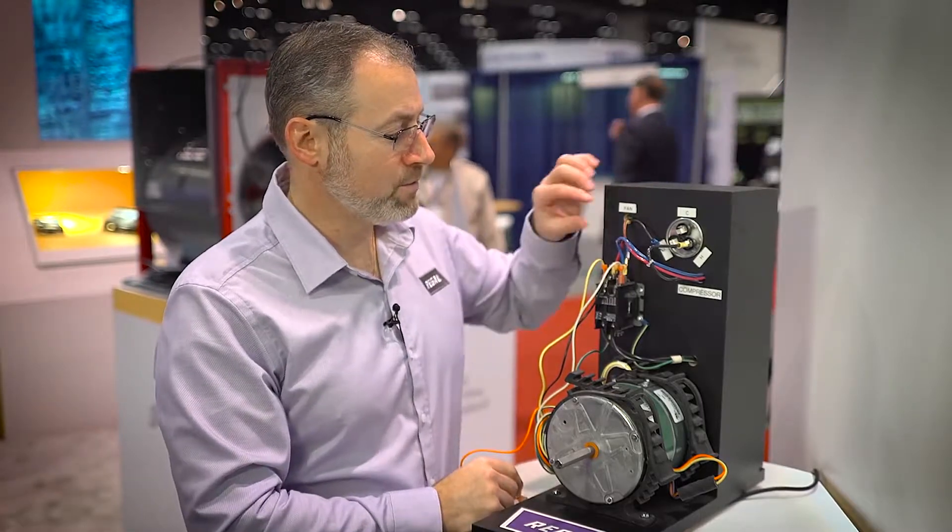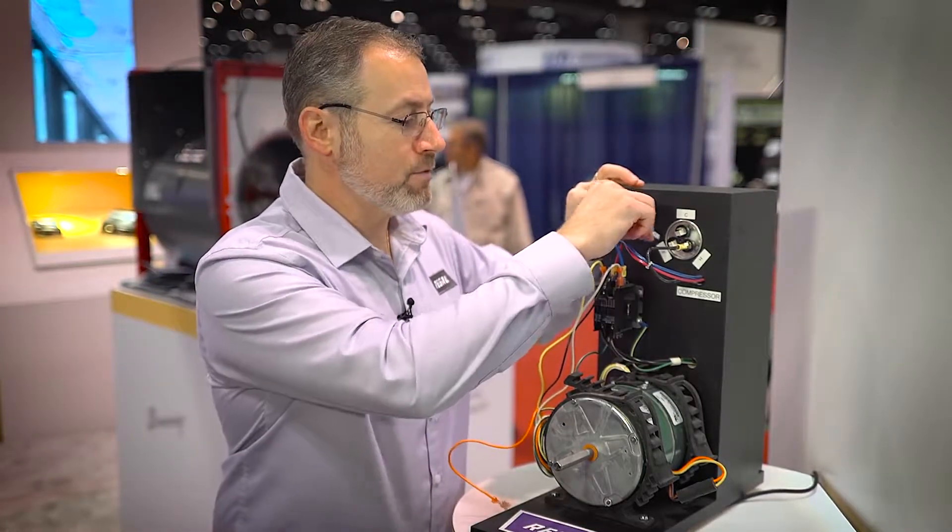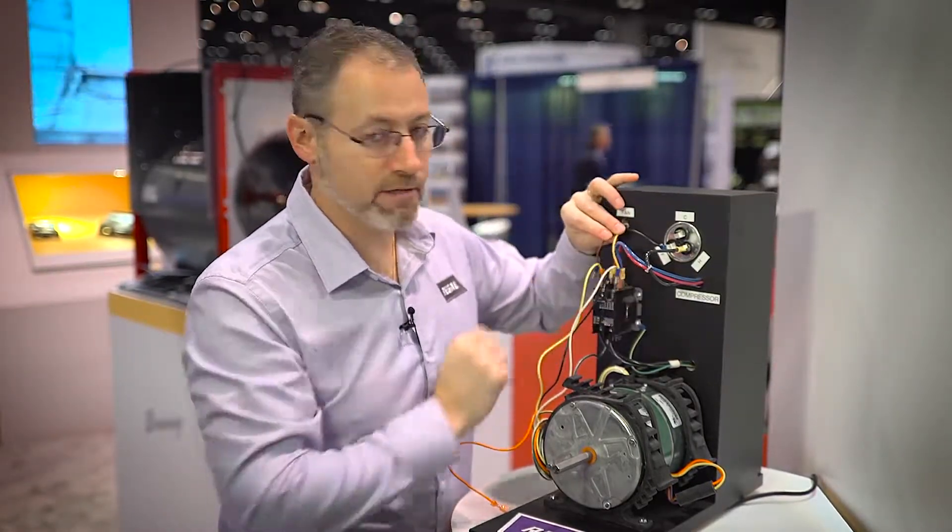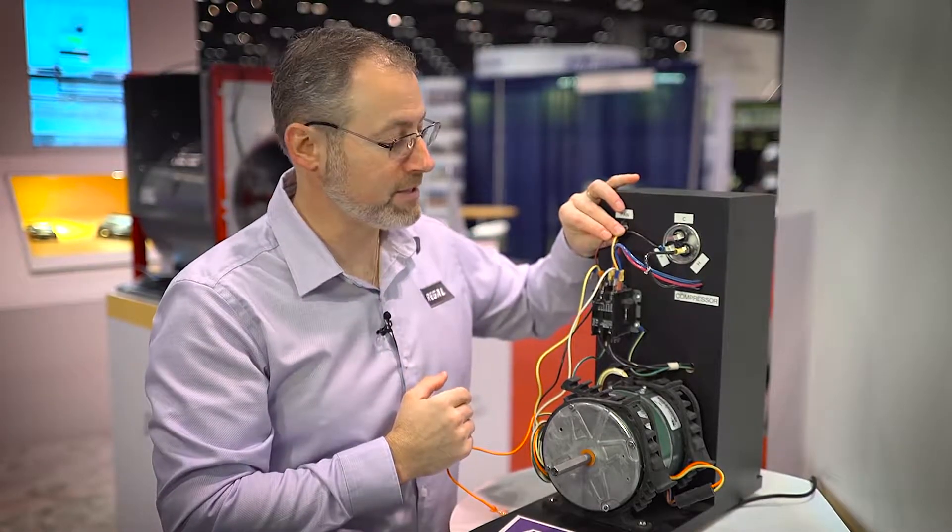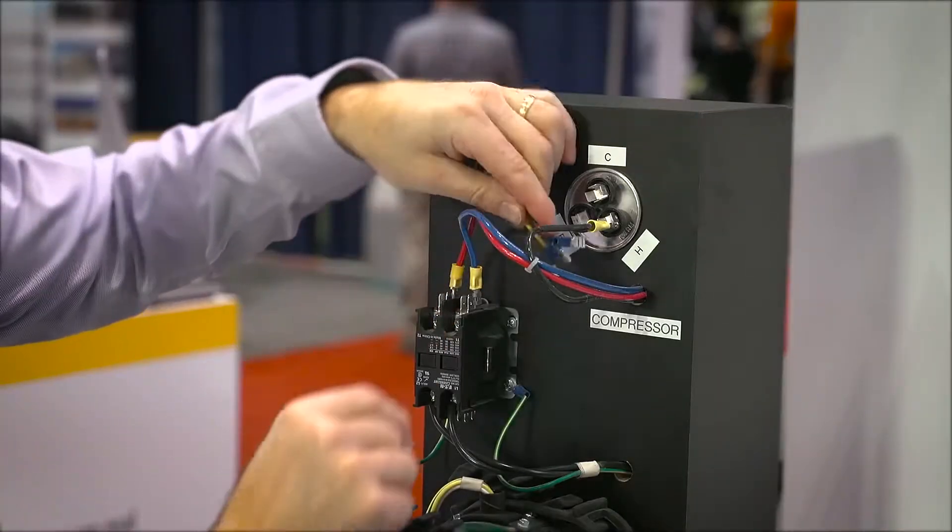On this unit we see that the fan motor, in this case a PSC, would be connected to the capacitor and connected to either side of the contactor. So first we would remove that motor by disconnecting the wires from the contactor and disconnecting the wires from the capacitor.